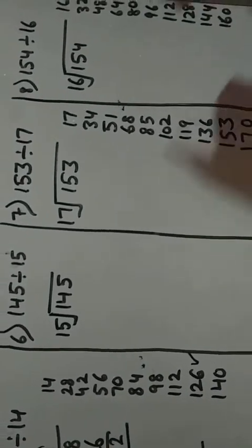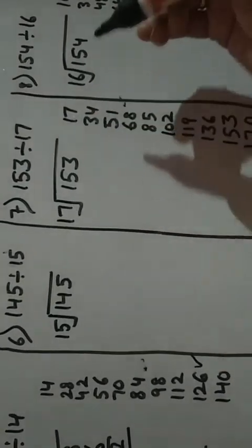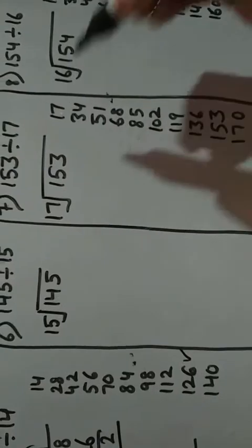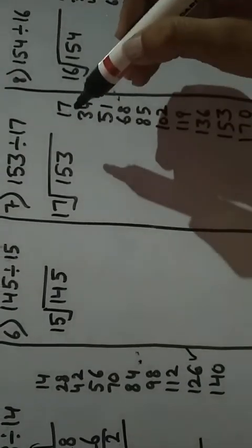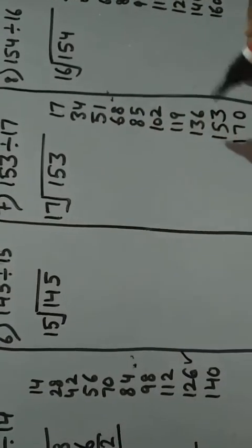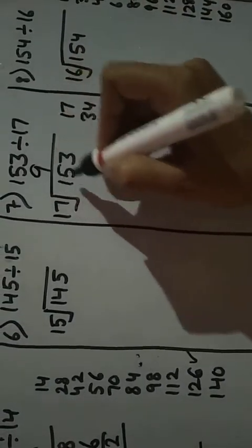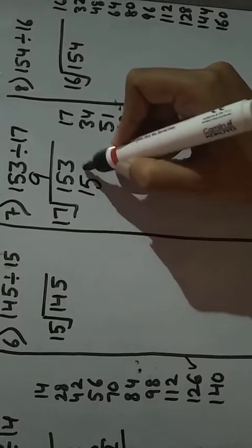Next question number 7: 153 divided by 17. 17th table is written here. Check here, 153 comes on 17th table. Yes, 17 times 9 is 153.